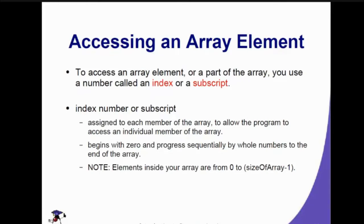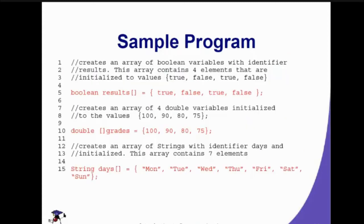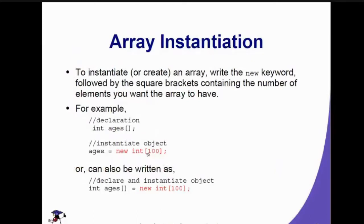To access an array element, we use a number called the index or subscript. This index number is assigned to each member of the array to allow the program to access an individual member. It begins with zero and progresses sequentially by whole numbers to the end of the array. The elements inside your array always start from index 0 to n minus 1 — so even if the array size is 100, the last index is 99 because the index starts from 0.